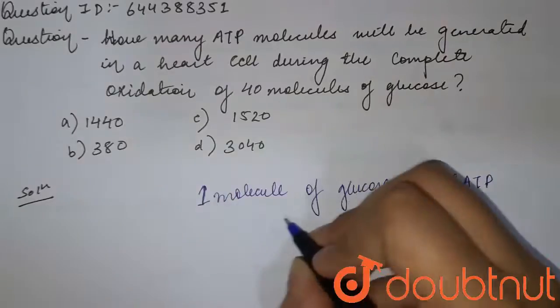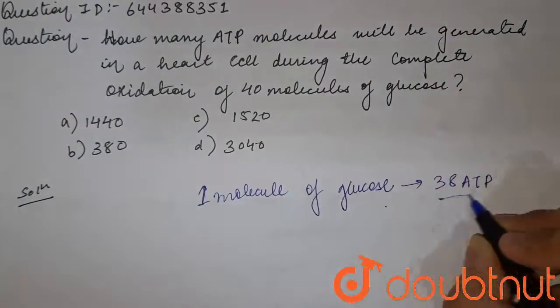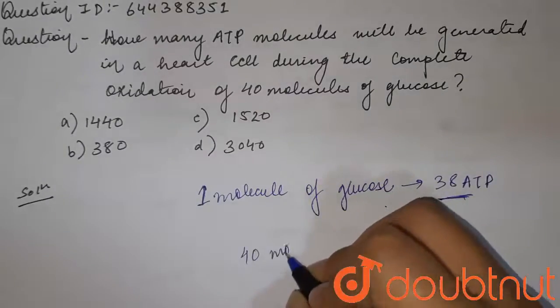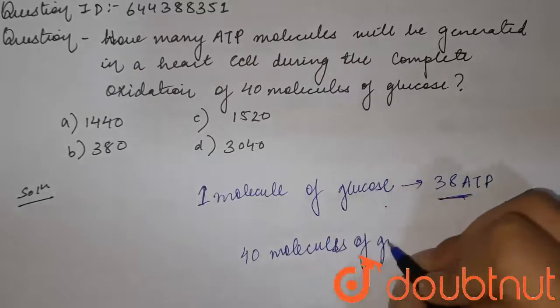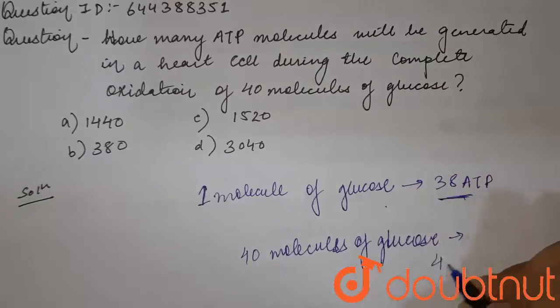So whenever there is one molecule of glucose getting oxidized, 38 ATPs are required. So for the 40 molecules of glucose, a simple binary method would be required: 40 into 38.